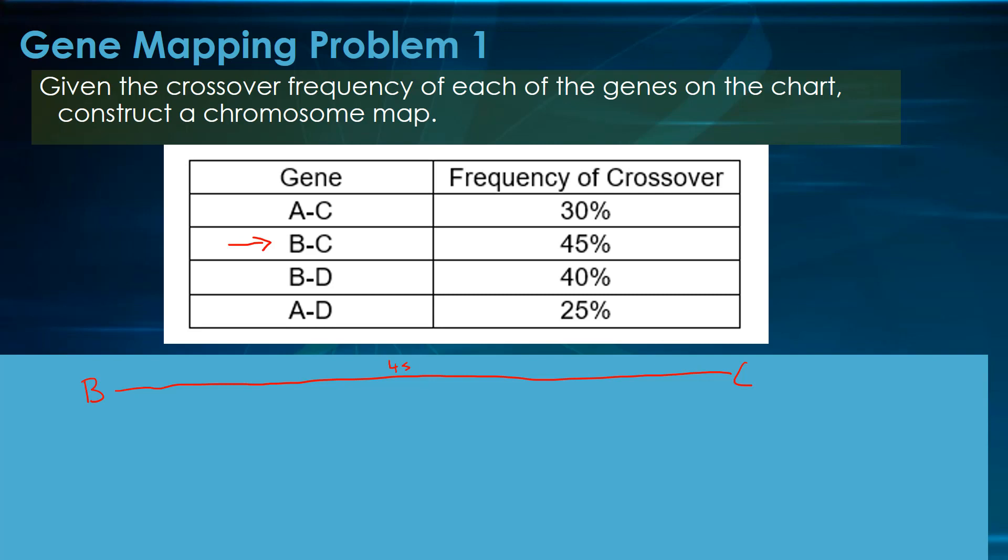Let's go next. B to D is 40, so we're going to put D right there. Now we'll separate them, then we can put it all together afterwards.